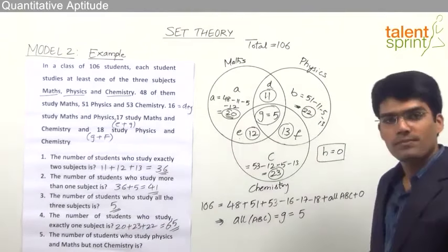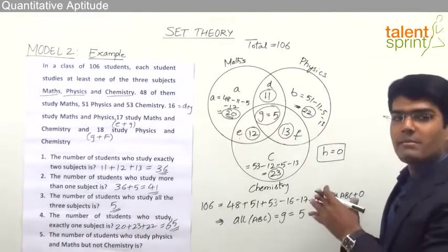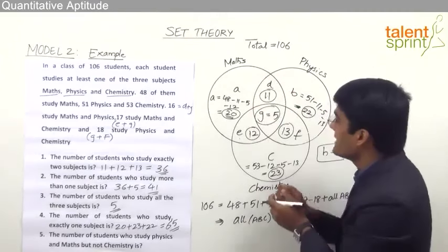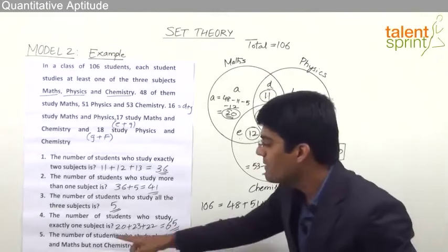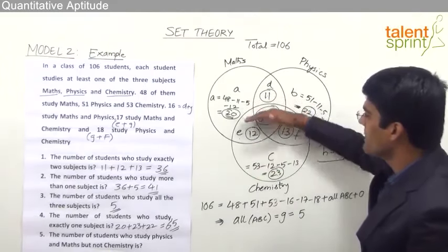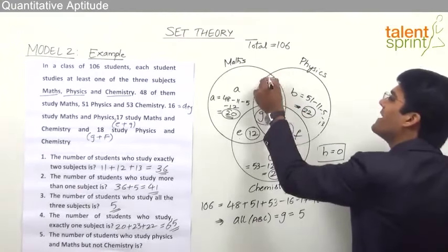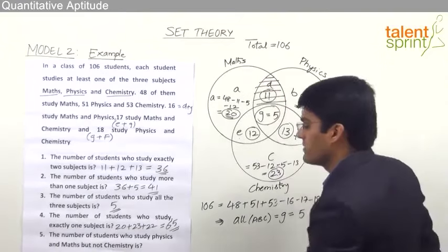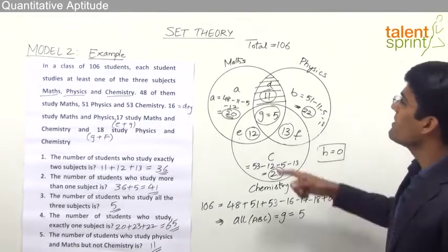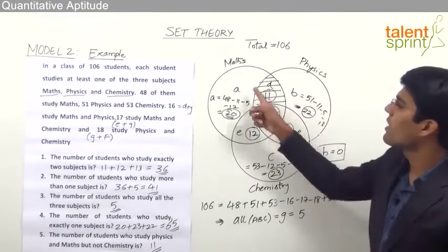Question 5: the number of students who study Physics and Maths but not Chemistry. Maths and Physics together is region D and G, but excluding Chemistry means we remove region G. So the answer is just region D = 11. Similarly, students studying Maths and Chemistry but not Physics is E = 12, and students studying Physics and Chemistry but not Maths is F = 13.